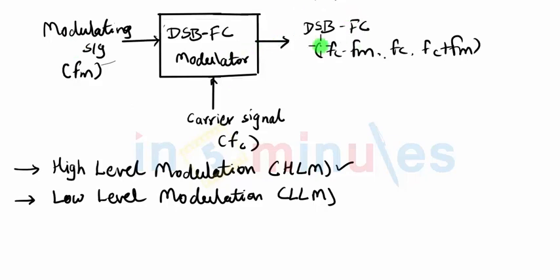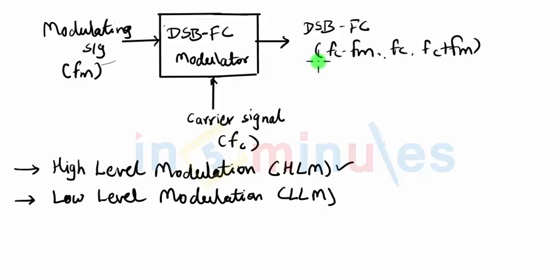In short, in HLM modulation takes place at a high power level, and therefore the output of the modulator — the DSBFC signal — already contains high power. As a result, we will not need many power amplifiers after the modulation stage, because the input signals already contain a large amount of power and the output of the modulator can be transmitted directly through the antenna without further power amplification.